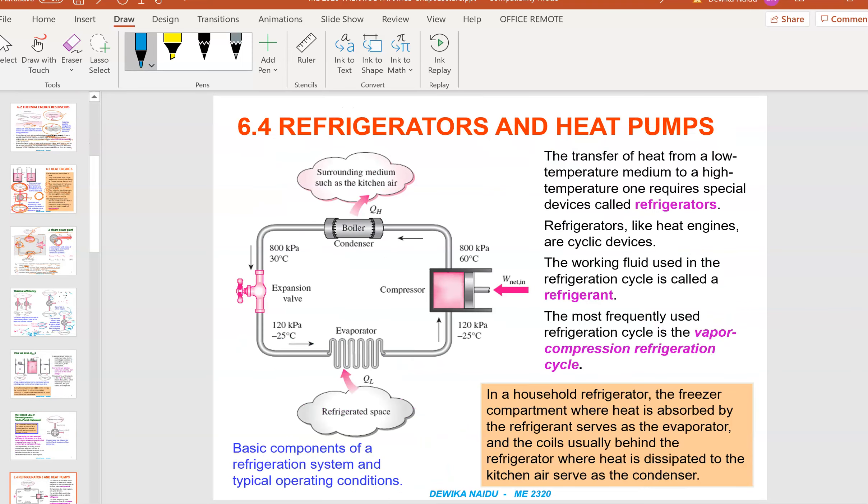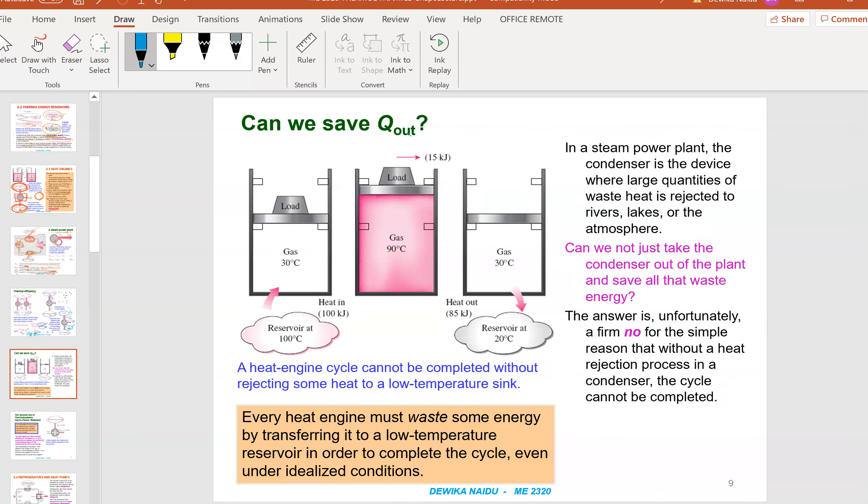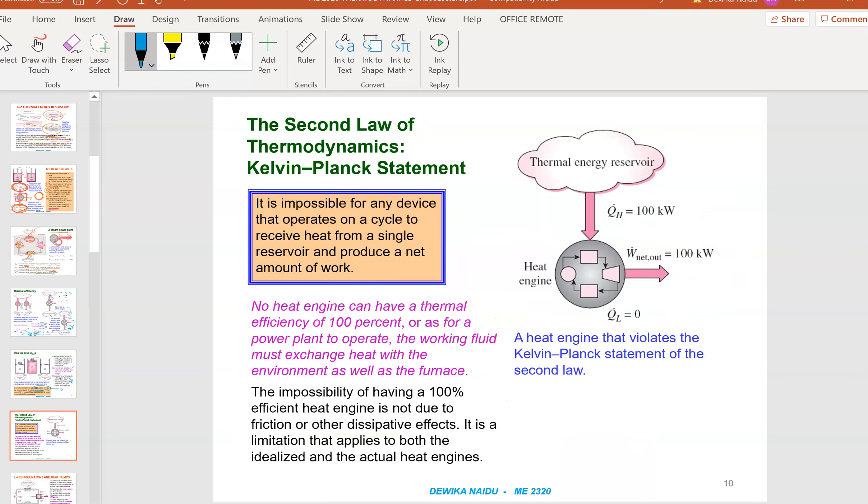In a steam power plant, the condenser is a device where large quantities of waste heat is rejected to the river, lake, and atmosphere. Can we just take the condenser out? Can we just remove the condenser because it's wasting a lot of energy? The answer is definitely no. We cannot do that because if we remove the condenser from the process, then the heat engine won't become a heat engine—it will never work. We need the condenser, no matter even though it is actually wasting energy to the sink. Every heat engine must waste some energy by transferring it to a low temperature reservoir. But of course, nowadays scientists are trying to use back this energy somewhere else.